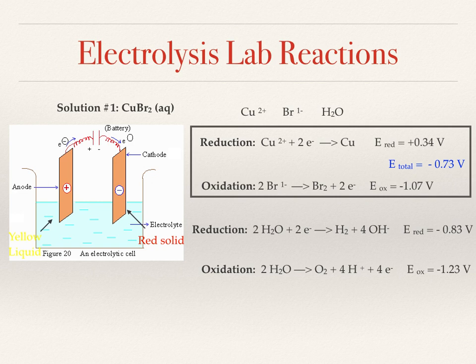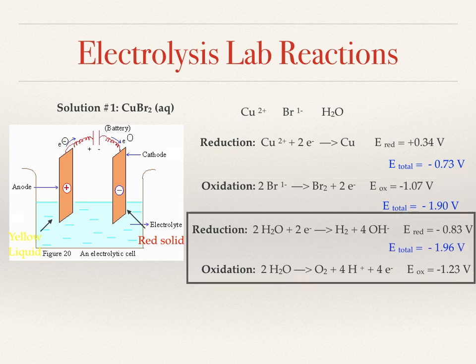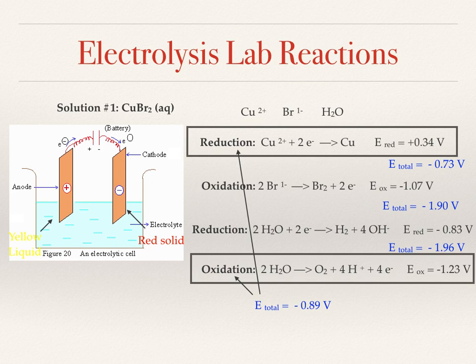But we can't stop there. We need to look at the other combinations that may occur. We could look at the oxidation of the bromide ions and the reduction of water. Your E-total would be negative 1.9 volts. We can also look at the reduction and oxidation of just water by itself, negative 1.96 volts. And the reduction of copper ions and the oxidation of water comes out to negative 0.89 volts.